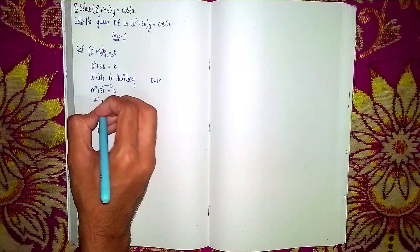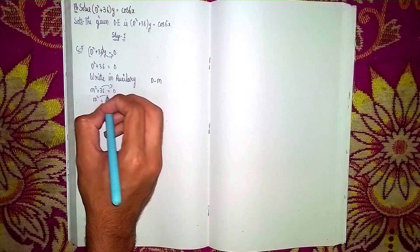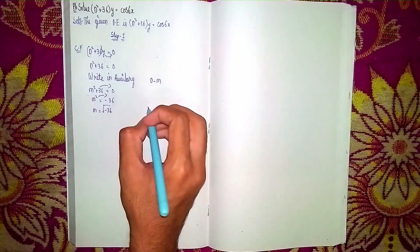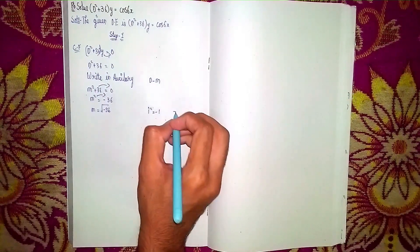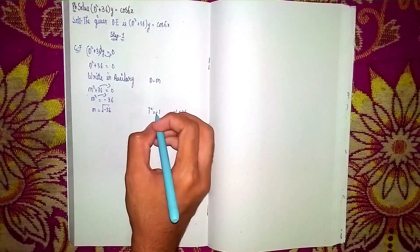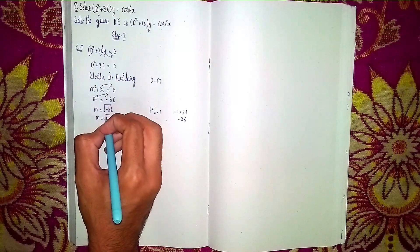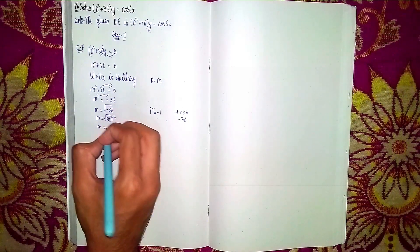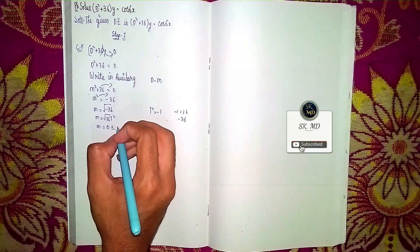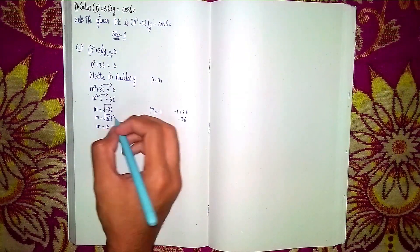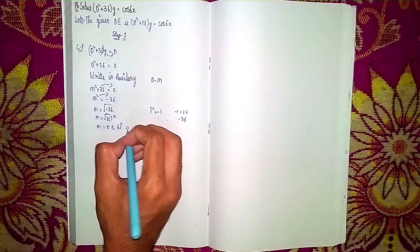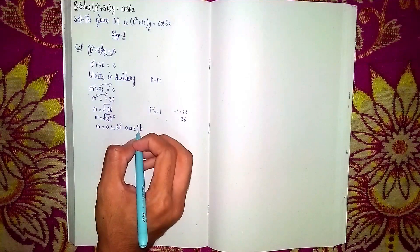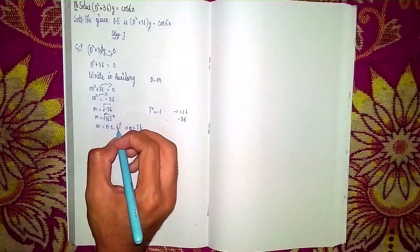Sending +36 to the other side: m² = -36. Taking the square root: m = √(-36). Since we can't have a negative under the root, I use i² = -1, so m = √(36 · i²). Taking out the root, √36 = 6, so m = 0 ± 6i.